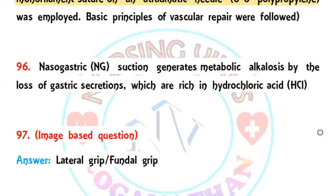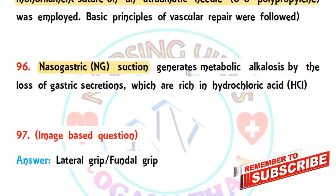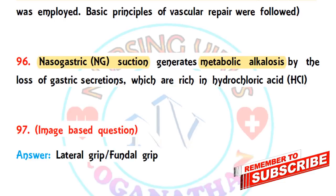Question 96: nasogastric suction generates metabolic alkalosis by loss of gastric secretion, which is rich in hydrochloric acid. In the question, a patient with a nasogastric suction tube — what condition will they develop? The answer is metabolic alkalosis.